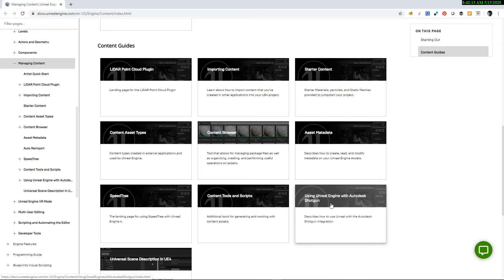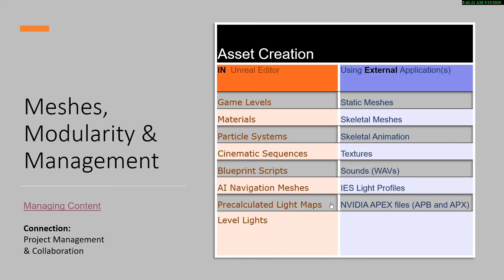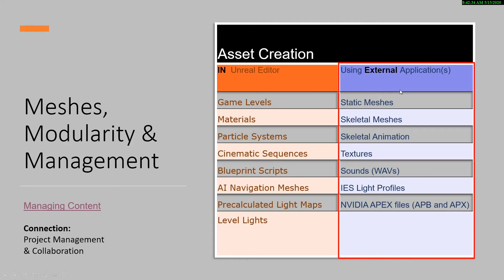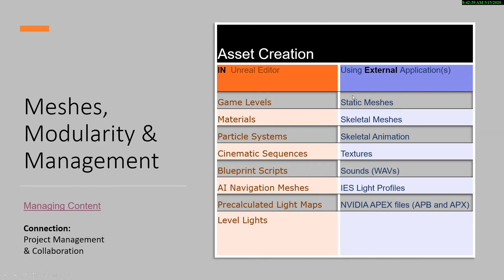Let's move back into the overview presentation. Unreal Engine has a growing number of tools for building assets in the engine. However, meshes are still one of the core ones still brought in from outside of the engine. In addition to 3D meshes, the blue column shows the other assets that are still mainly created outside of Unreal. For this course, we will mainly focus on static mesh FBX workflows. However, in the future courses, we will implement all the assets listed in both the blue as well as the orange columns in the Unreal courses.